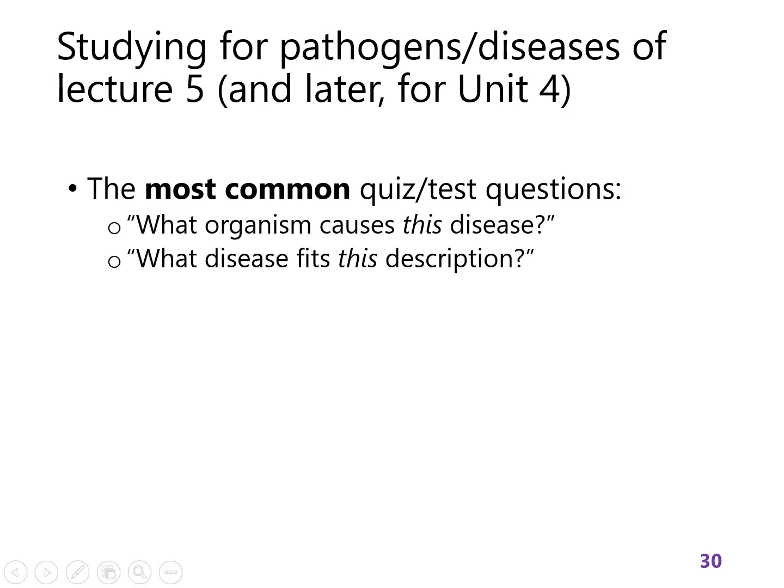The most common test questions you're going to get on this kind of material — some of these will be on the upcoming quiz, some will be on the exam, and then the entire Unit 4 exam — will be like: what organism causes this disease? You have to know which organism causes which disease. In some cases it's easy because they have the same name. In other cases it isn't, because you have a species name versus a disease named after some dead person.